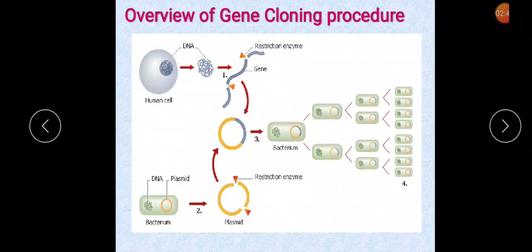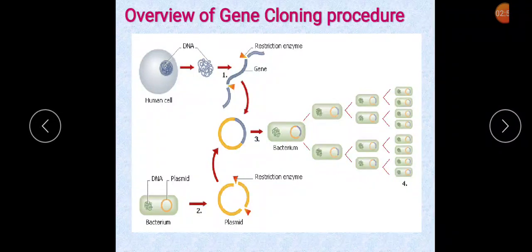Recombinant DNA technology implies that new combinations of DNA molecules can be made — that is, recombinant DNA molecules. It is perhaps the finest output from the brains of biologists who have been interested in tailoring and manipulating heredity to the best of man's advantage.